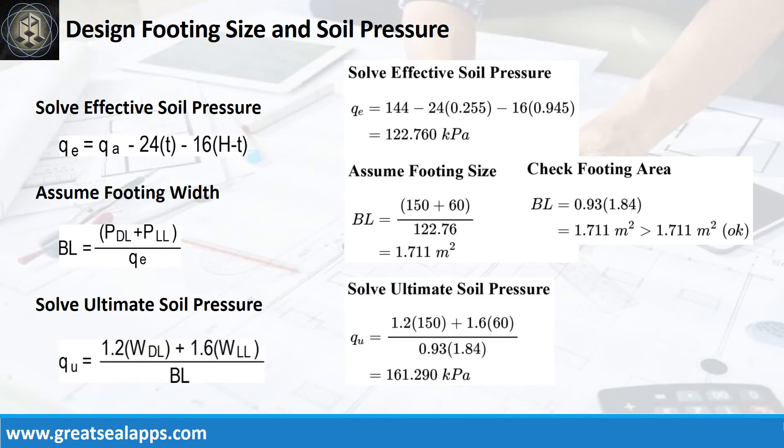Given allowable soil pressure equals 144 kPa, depth from natural grade line equals 1200mm, and assumed footing depth equals 255mm, the effective soil pressure is 122.76 kPa. Given axial dead load equals 150kN and axial live load equals 60kN.